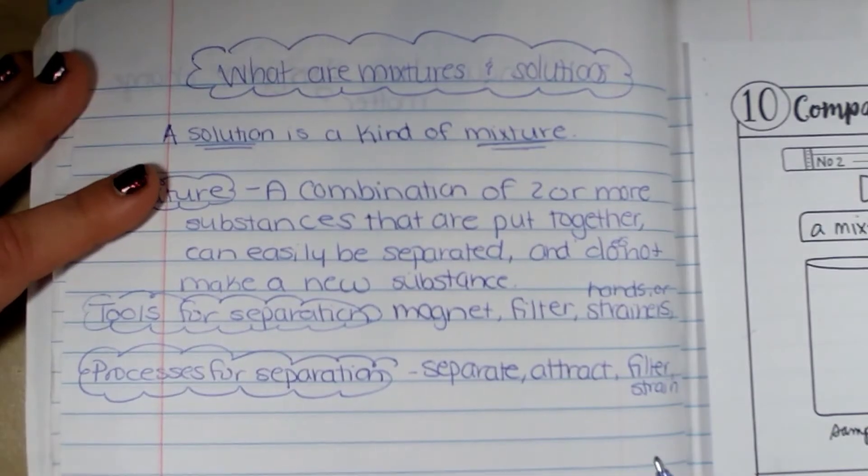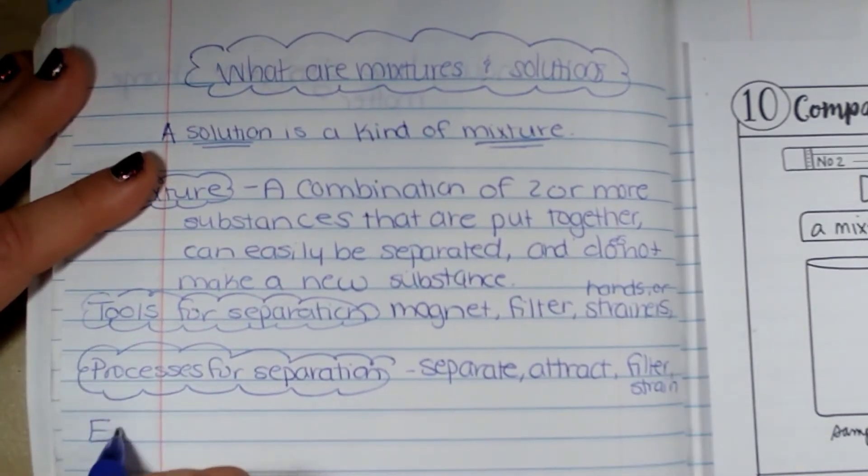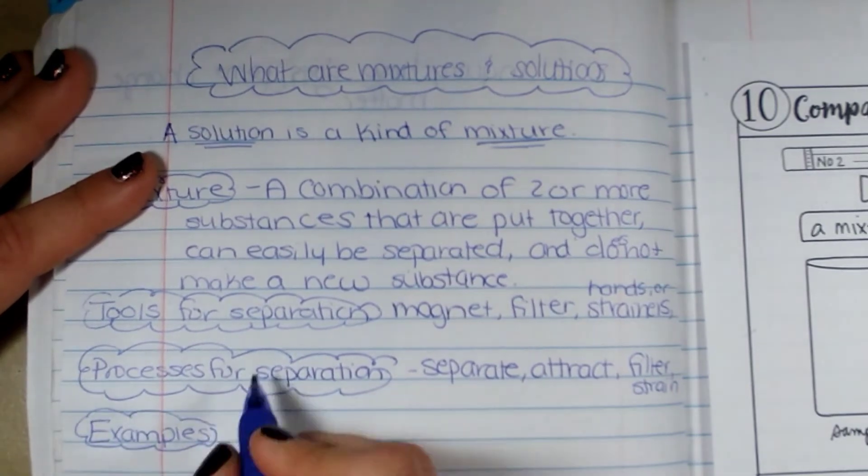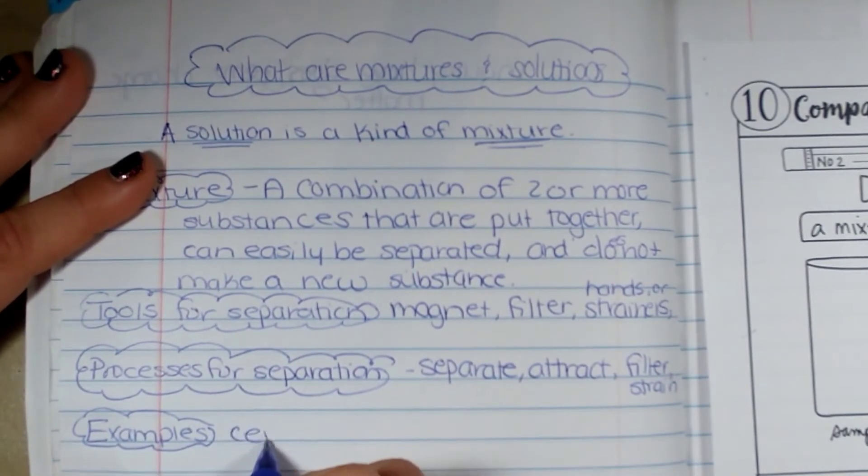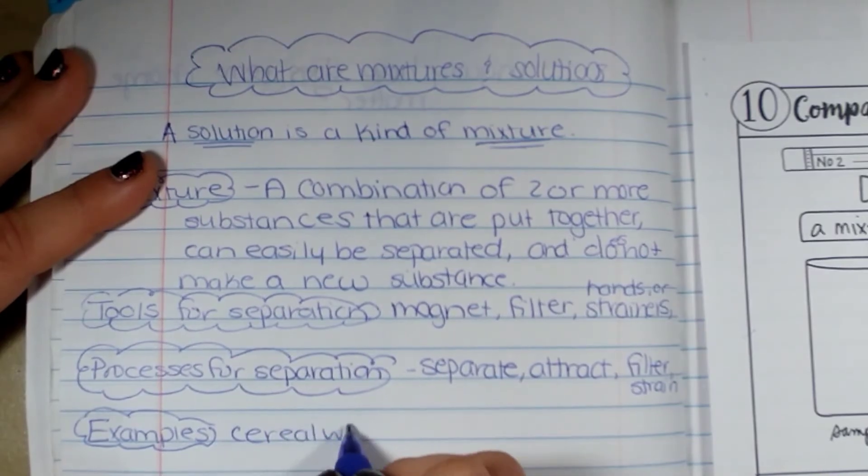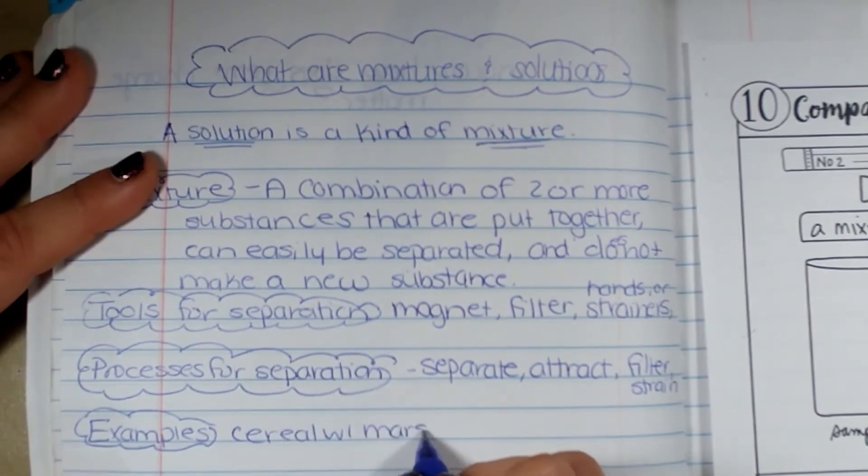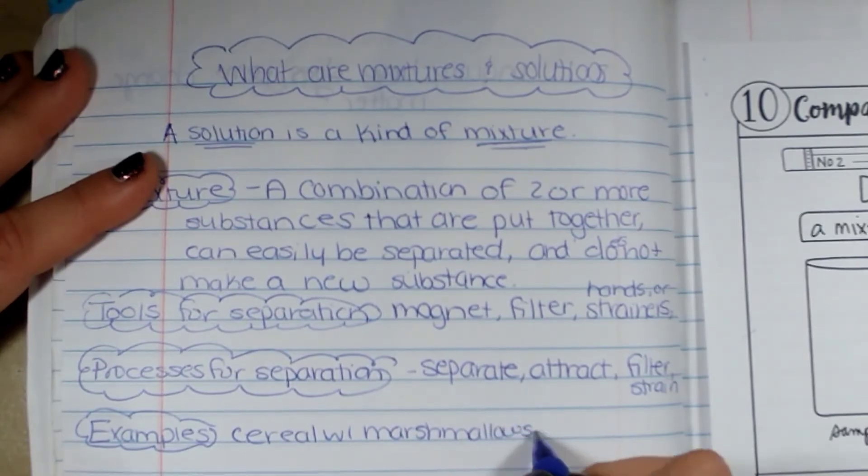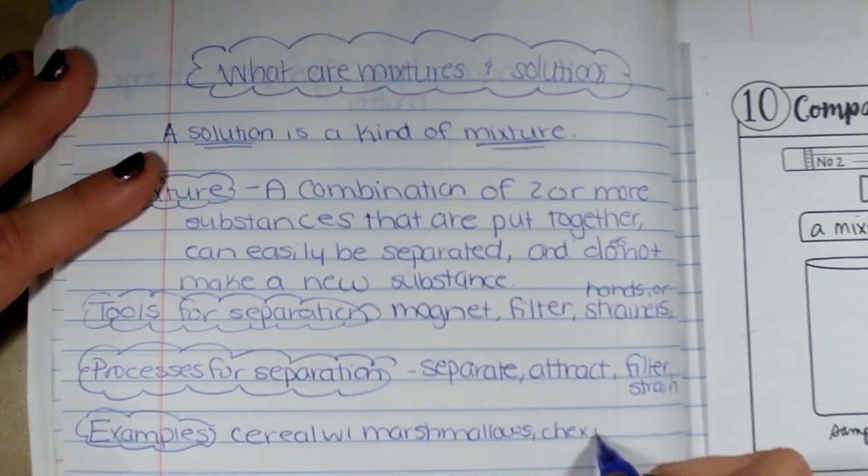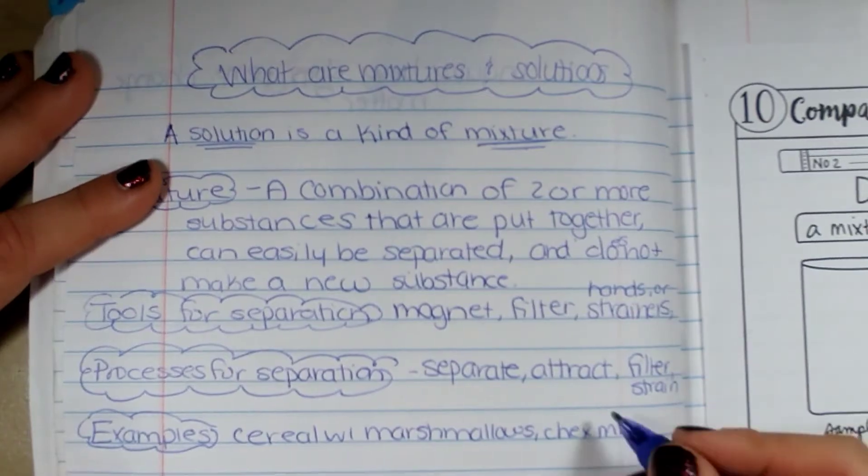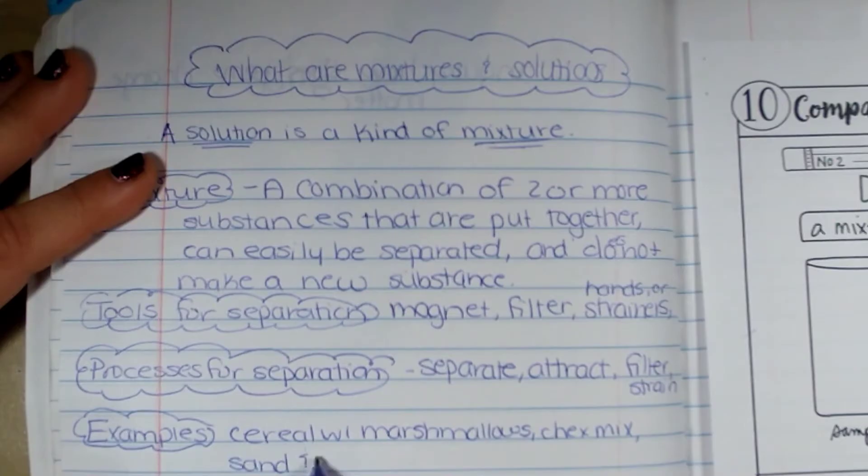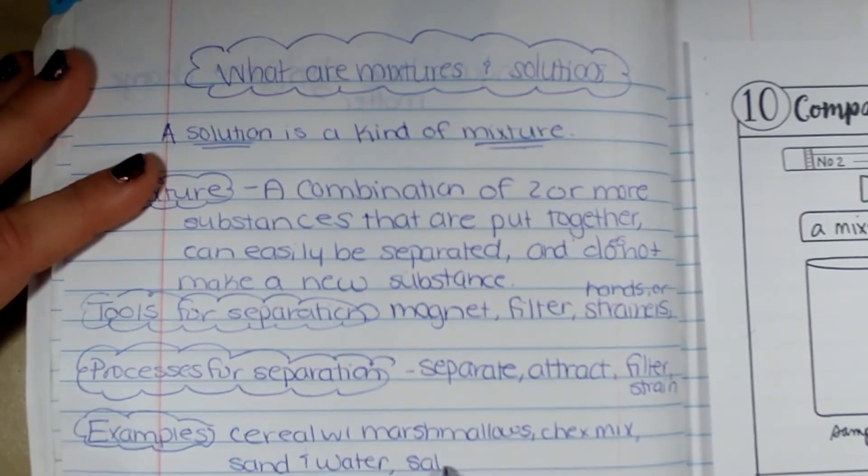And some examples could be cereal with marshmallows, like Lucky Charms, Chex Mix, sand and water, salad, things like that.